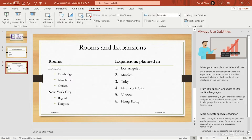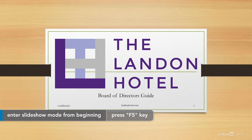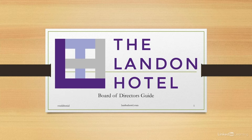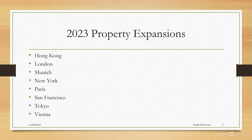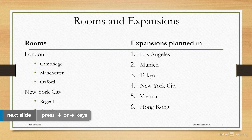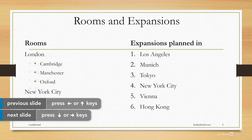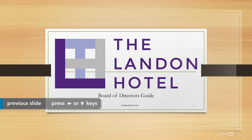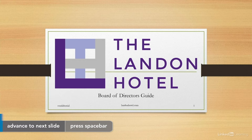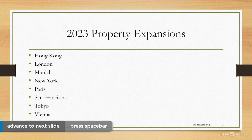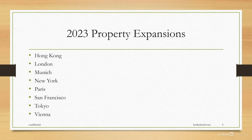The keyboard shortcut F5 will also start you from the very first slide. Once you're in your presentation, you can advance from slide to slide by clicking your mouse or using the down or right arrows on your keyboard. You can go back to the previous slide using the left or up arrows. The spacebar can also advance through the presentation — a helpful option if you walk around and need to reach over to your computer.